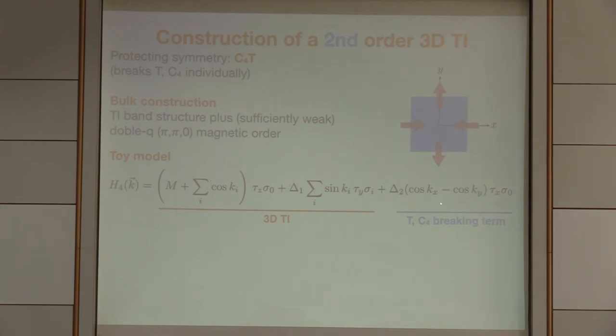We can just make a little addition to this model, which is this type of term here, which breaks time reversal in C4, but it preserves the combination of the two. You see, for example, if you C4, it maps kx to ky and ky to minus kx, and then that term would be odd under this, under exchanging kx and ky. But then the matrix is such that time reversal is also odd under this. We can diagonalize this Hamiltonian on such a geometry. There's kz still as a good quantum number. You beautifully see these chiral hinge modes look pretty much like integer quantum Hall edge modes, just now they are at the termination of a 3D system.